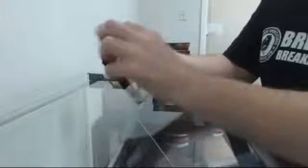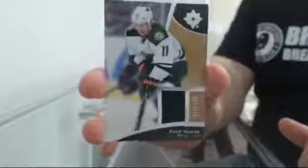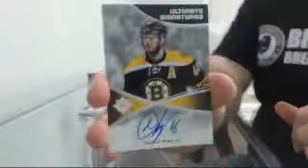Box 4. Jersey, 22-99 for Minnesota, Zach Parise. Ultimate Signatures for Boston, David Krejci. Ultimate Signatures for Tampa Bay, Tyler Johnson.